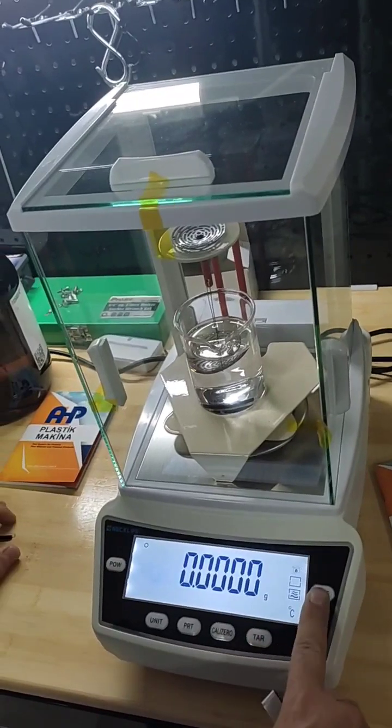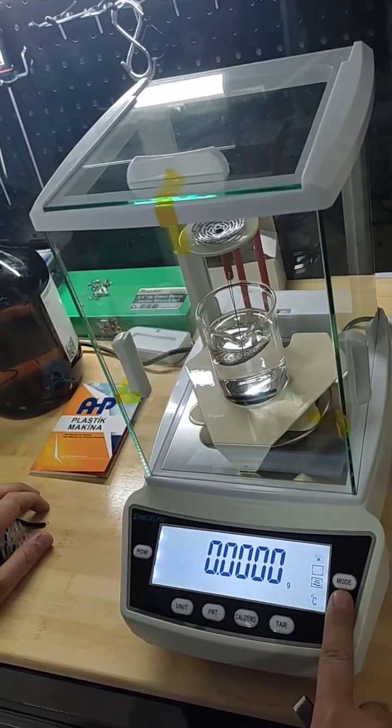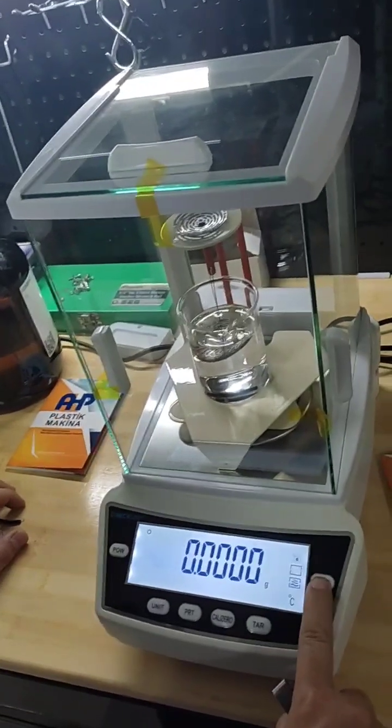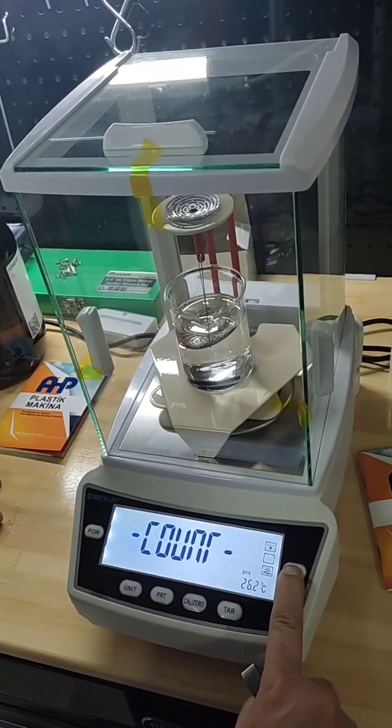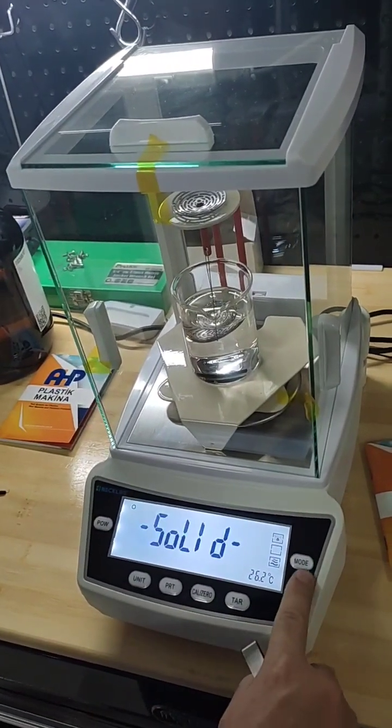I want to show you how to use the density mode of this specific brand of precise balance. Click on mode, keep the mode key pressed and you will see density here. Then release the mode key.